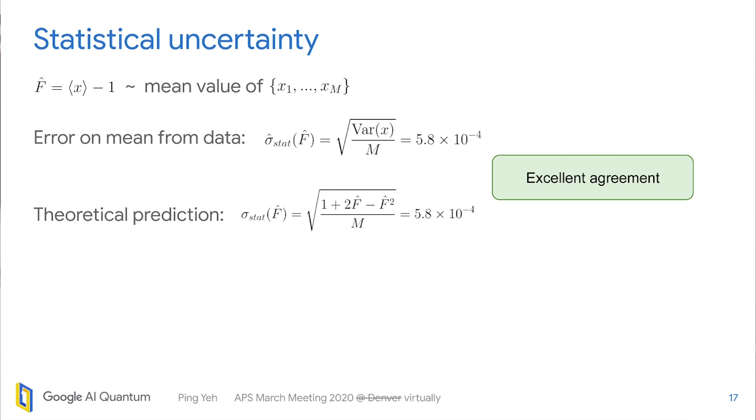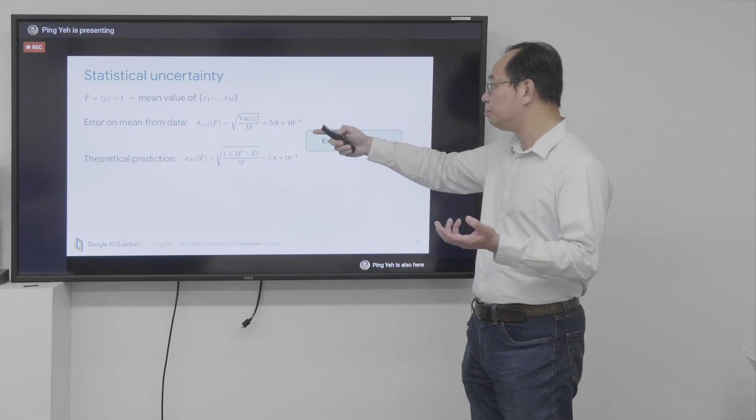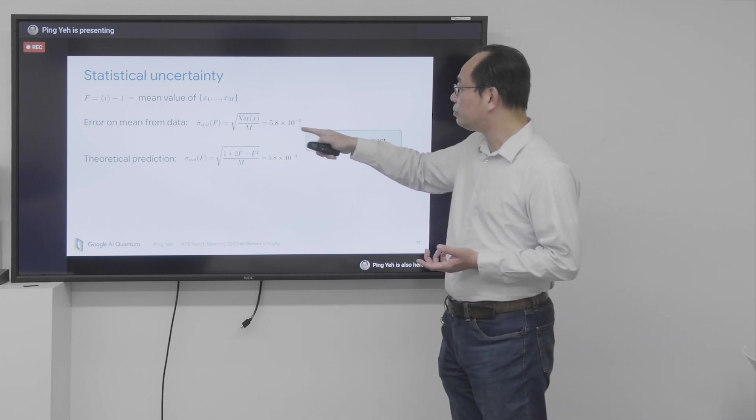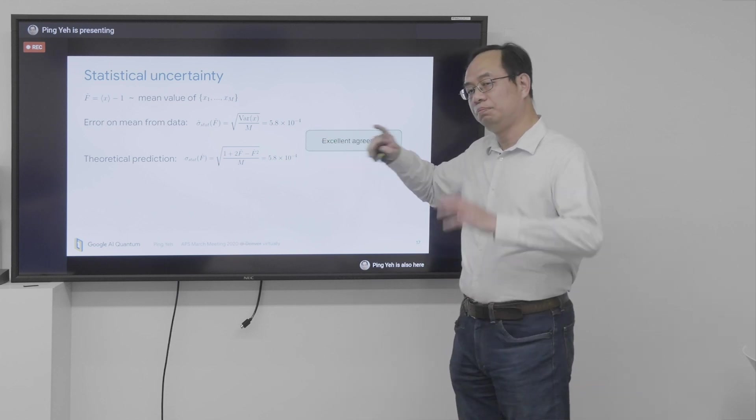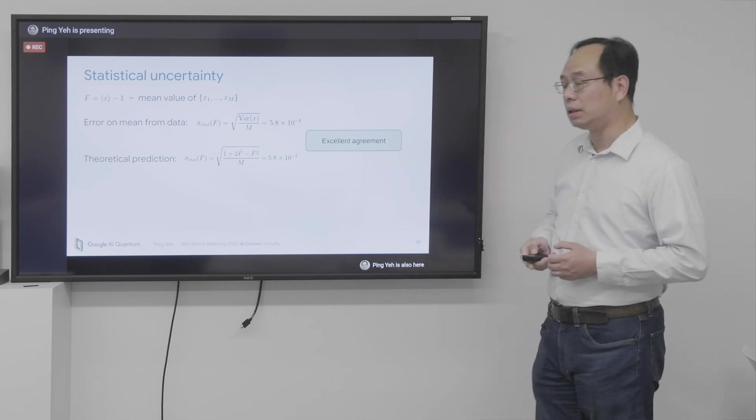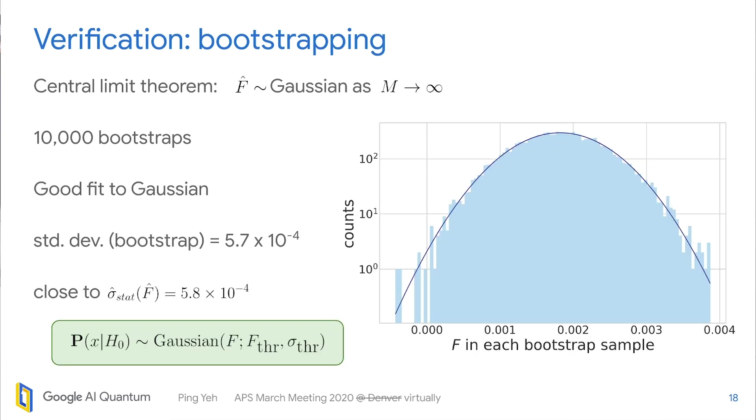And the next is we want to estimate the statistical uncertainty on the estimated fidelity. And because it is a mean, so error on mean is kind of a standard way to do that. So from data, we estimate to be this value. And from the theoretical PDF, you can also estimate. And we find out that there is an excellent agreement between the two. So that means the theoretical prediction can be used, actually, for null hypothesis distribution. And furthermore, we verify the statistical uncertainty by bootstrapping.